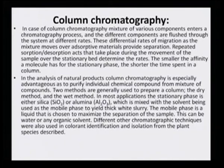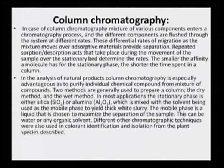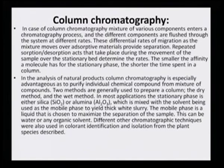Two methods are generally used to prepare a column: the dry method and the wet method. In most applications, the stationary phase — either silica gel or alumina — is mixed with the solvent being used as a mobile phase to yield a thick white slurry. The mobile phase is a liquid chosen to maximize the separation of the sample; this can be water or any other organic solvent. It is important that the same solvent in which the silica gel slurry has been made is used, because if the polarity of the slurry and the solvent subsequently used are very different, it will cause erratic movement on the column.